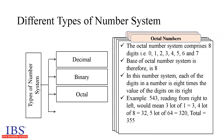The octal number system comprises 8 digits: 0, 1, 2, 3, 4, 5, 6, and 7. The base of the number system is therefore 8. Each digit in a number is 8 times the value of the digit on its right. For example, 543 in the octal number system, reading from right to left, means 3 lots of 1 equal to 3, 4 lots of 8 equal to 32, and 5 lots of 64 equal to 320, totaling to 355 in the decimal system.